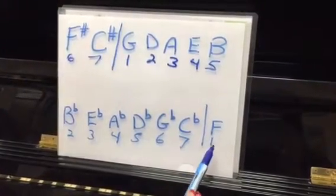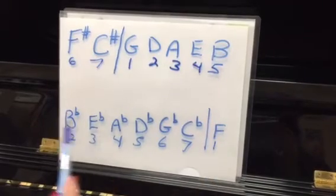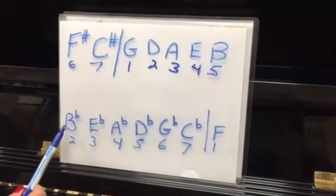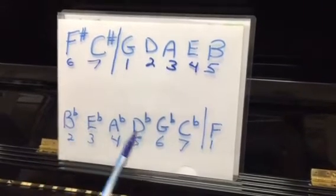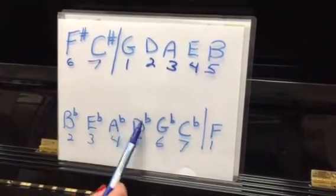F major that you have to memorize doesn't have a flat in its name. Has 1 flat. What is it? B flat. B flat major has 2. What is it? Battle ends. B flat, E flat. A flat major has 4. What are they? B, E, A, D.